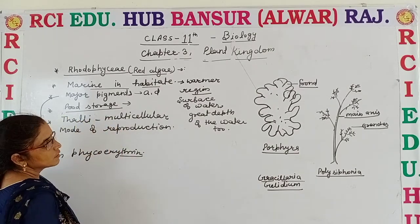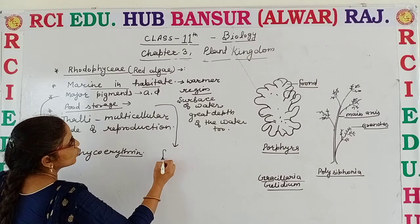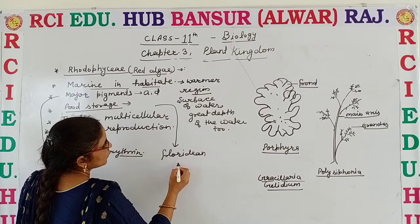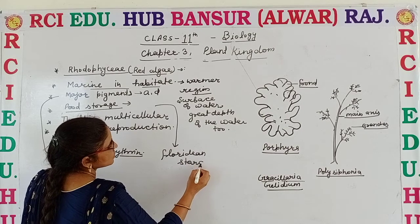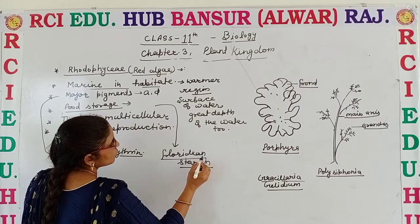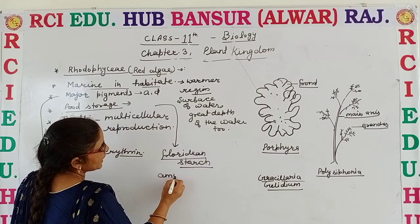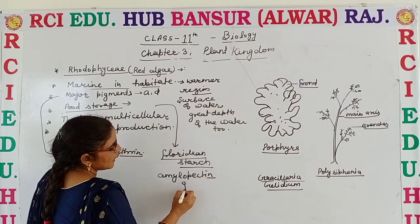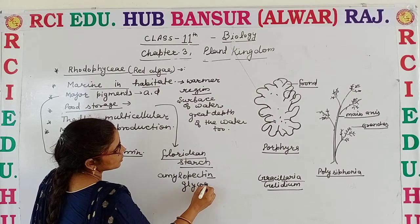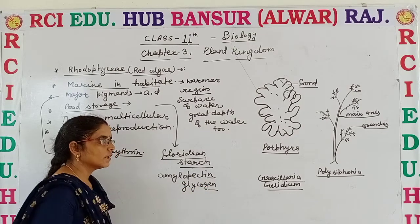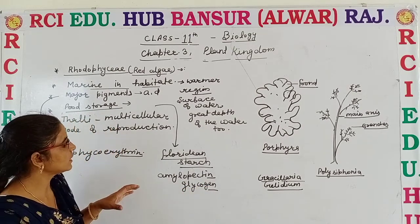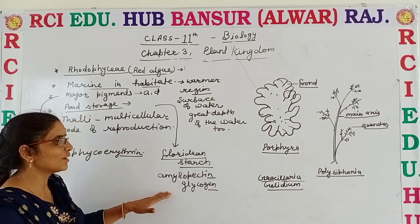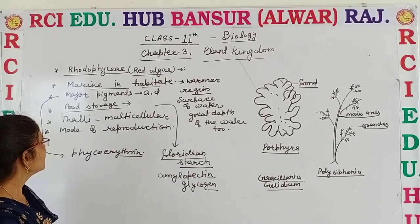Food stored. The food is stored in the form of floridean starch, which is just equal to amylopectin and glycogen in structure. So the food is stored mainly in the form of floridean starch, which is similar in structure to amylopectin and glycogen.